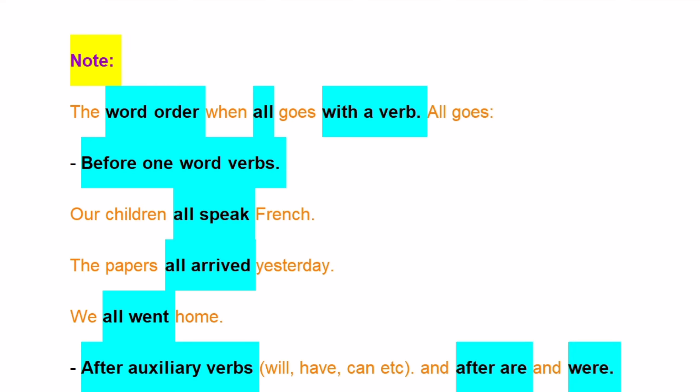Note the word order when 'all' goes with a verb. 'All' goes before one-word verbs: 'Our children all speak French,' 'The papers all arrived yesterday,' 'We all went away,' 'We all went home.' After auxiliary verbs — will, have, can, etc.